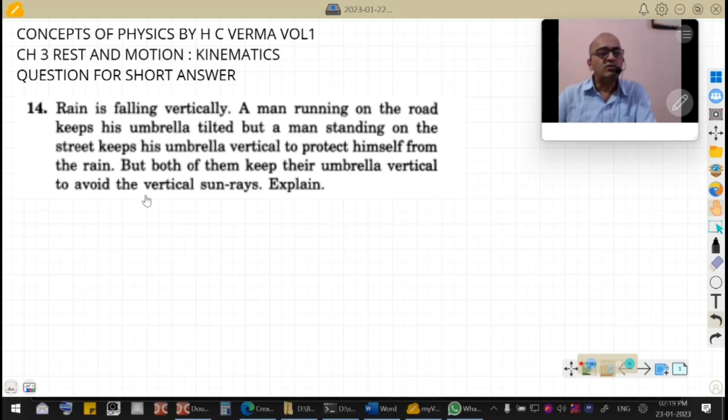The question is: Rain is falling vertically. A man running on the road keeps his umbrella tilted, but a man standing on the street keeps his umbrella vertical to protect himself from the rain. Both of them keep their umbrella vertical to avoid the vertical sun rays. Explain.